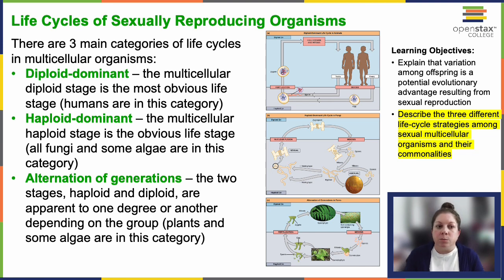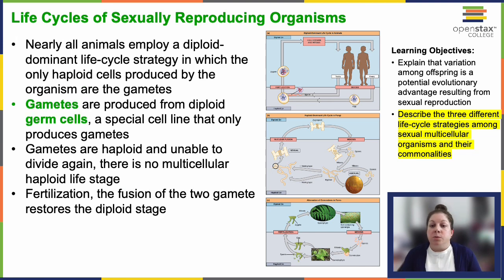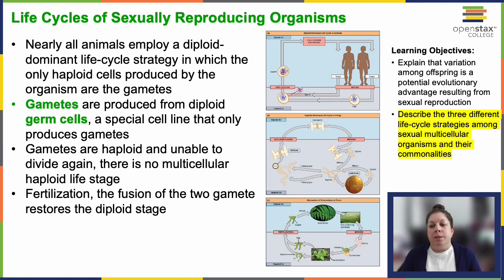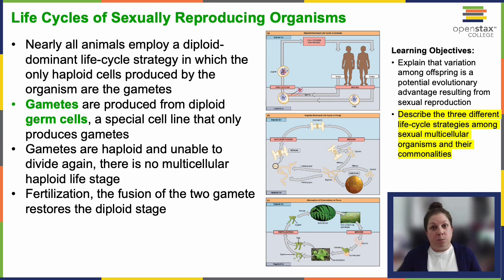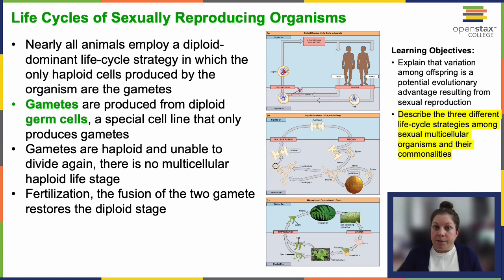Alternation of generations allows them to do this. The majority of animals adopt a diploid dominant approach, where haploid gametes are produced from a diploid germ cell, and then fertilization restores diploidy through the fusion of gametes from different individuals. We see this predominantly in animals — vertebrate and invertebrate — but it's important to keep in mind that there are other life cycles that exist.